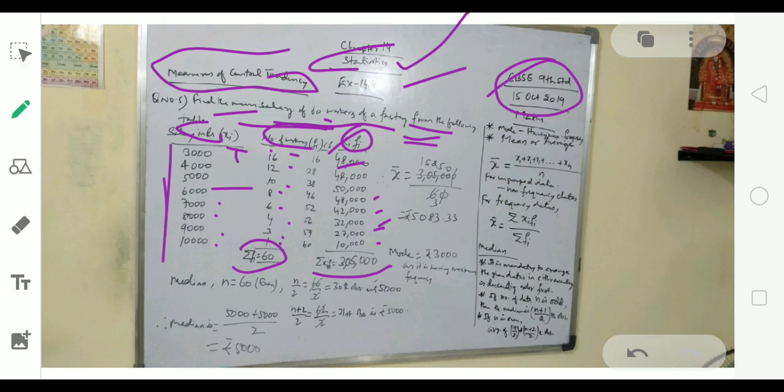Now we can find the mean by utilizing this formula. Sigma XI FI, that is 305,000, divided by 60. When we cancel common terms, we get rupees 5,083.33, a non-terminating but repeating decimal.